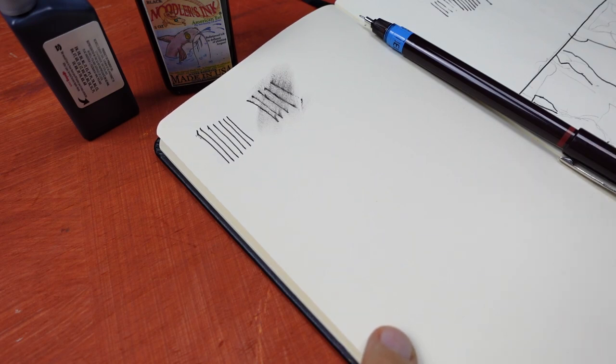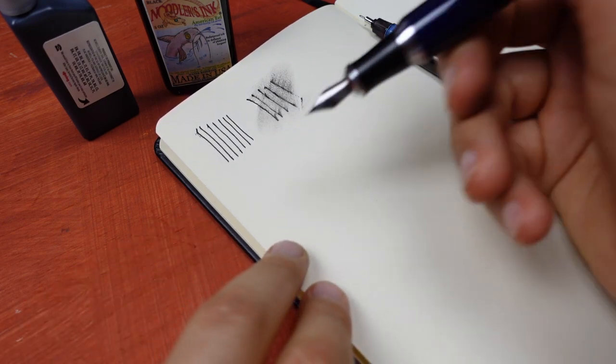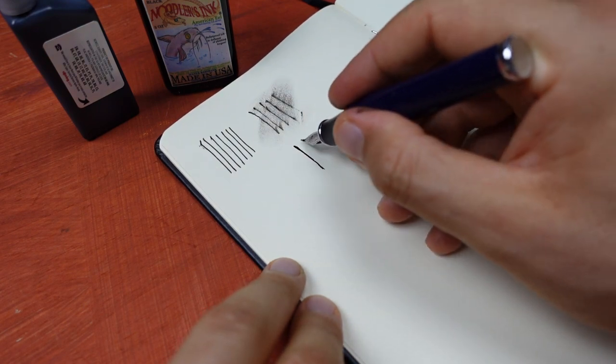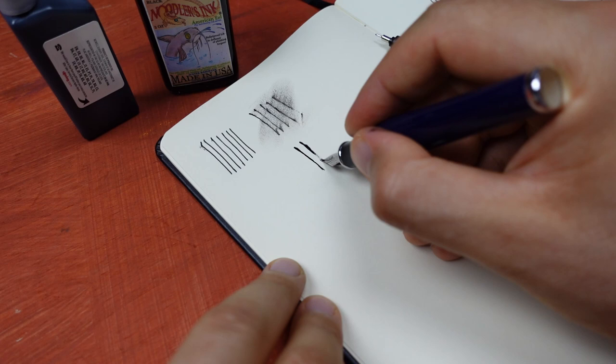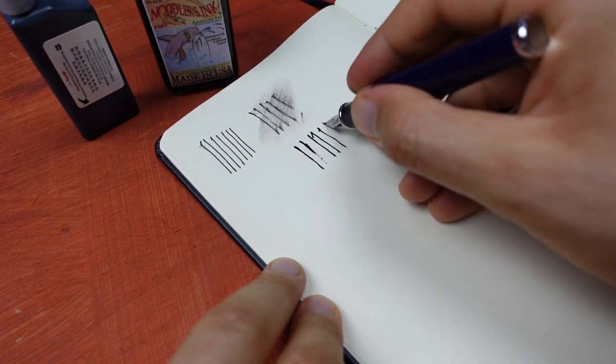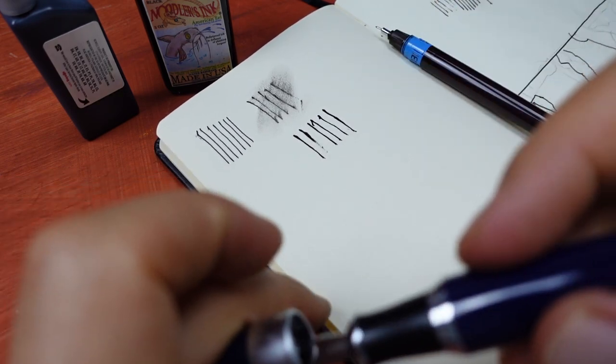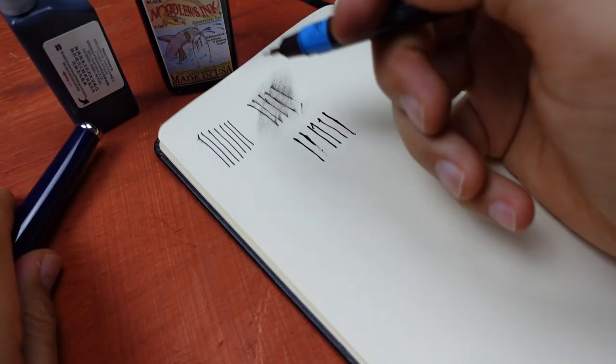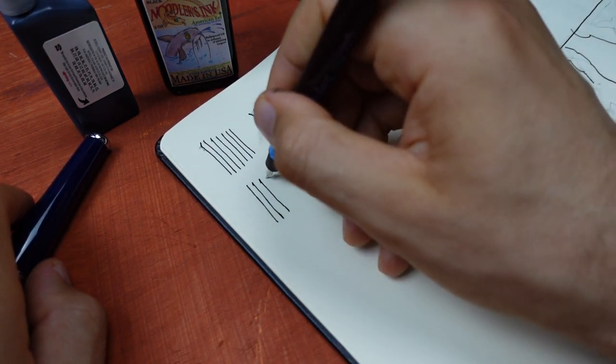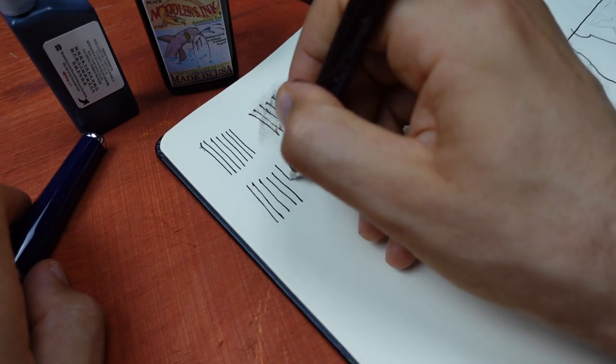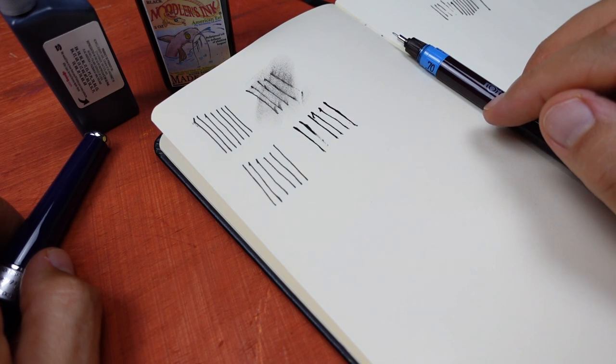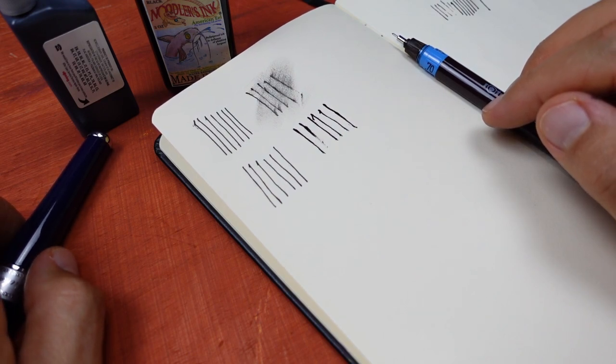Let's do another test. First, we'll draw first Noodler's ink. Then with Rotring. And let's wait longer. Let's say for 10 seconds or more.